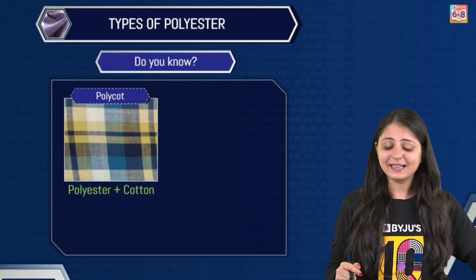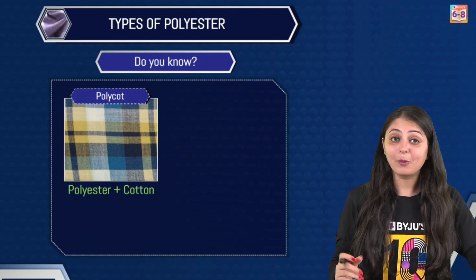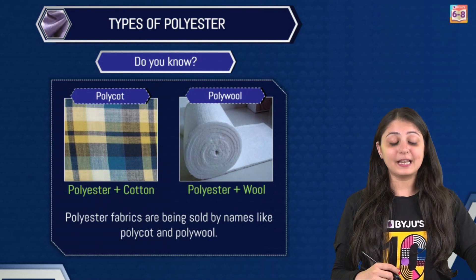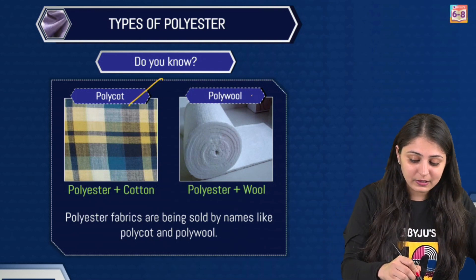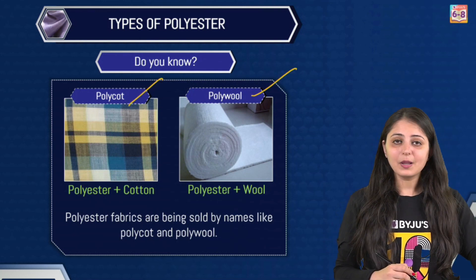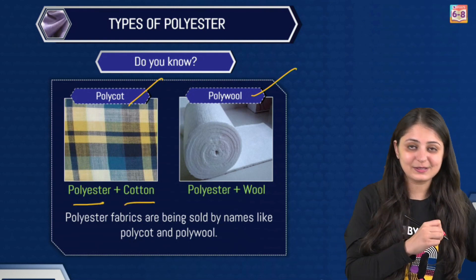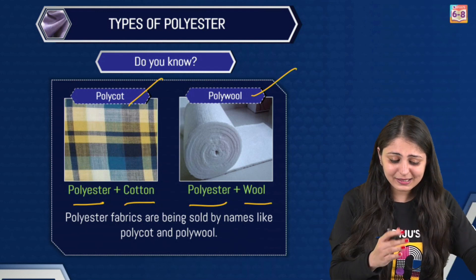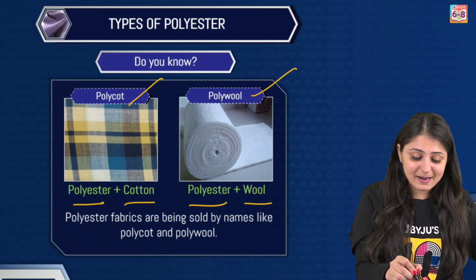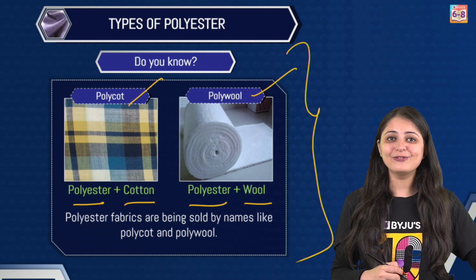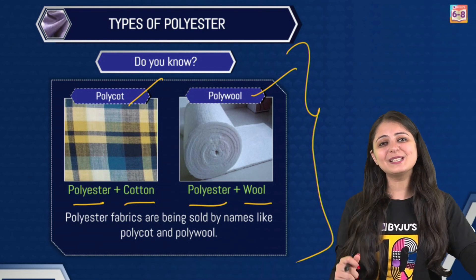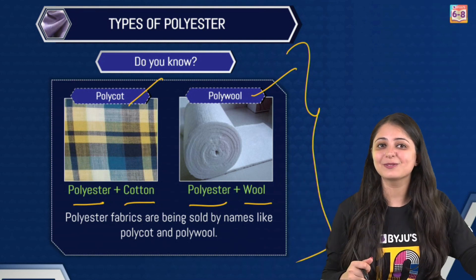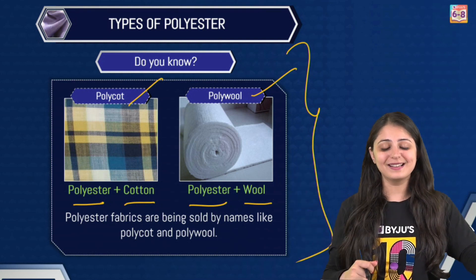Have you heard about polycote? Polyester fabrics are basically being sold by names like polycote and polywool. Polycote is actually polyester plus cotton; polywool is polyester plus wool. You can clearly see that these are made by mixing two types of fibres, and they're really easy to remember.